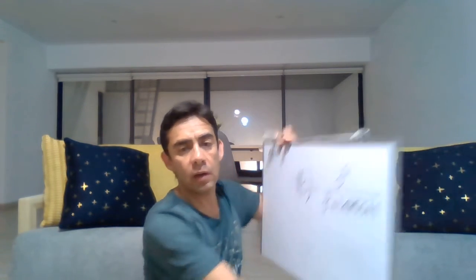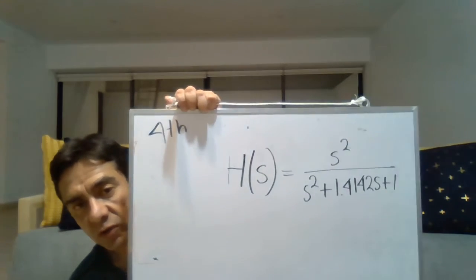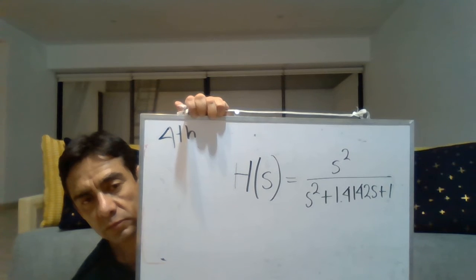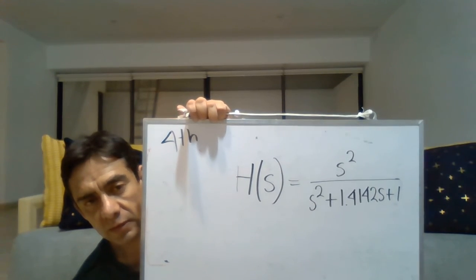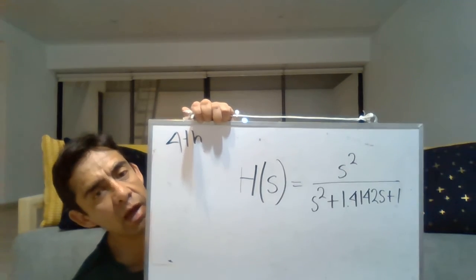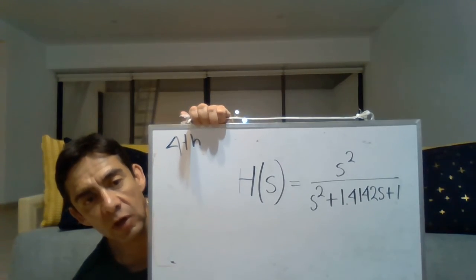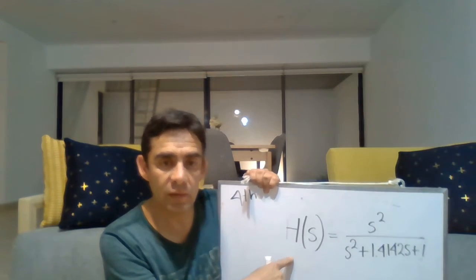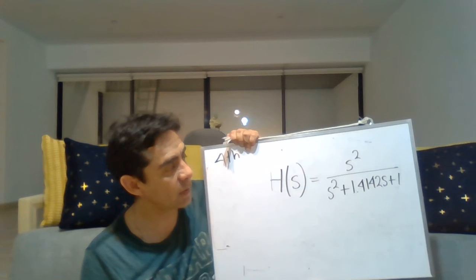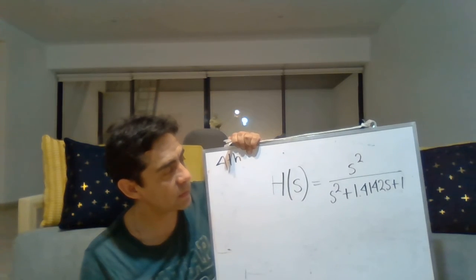Remember, you are going to be given transfer function expressions. You have to specify the order and you might have to specify the poles. Let's say you are given that expression — that transfer function. Is that a low-pass or high-pass filter? That's right, that is a high-pass filter. How do you know? Because of the numerator. That is a second-order high-pass filter with a cutoff frequency of 1.